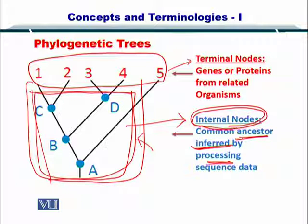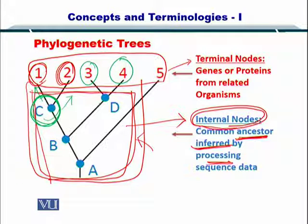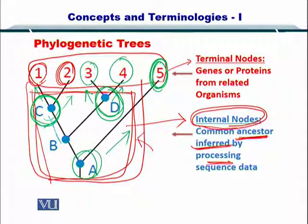The second term you need to understand is the ancestor. Sequences 1 and 2 have an ancestor in C, meaning sequence C has evolved into sequences 2 and 1. Similarly, sequences 3 and 4 have evolved from sequence D, and sequence 5 has evolved from sequence A. Moreover, sequences C and D have evolved from B. This is how this tree can be interpreted.